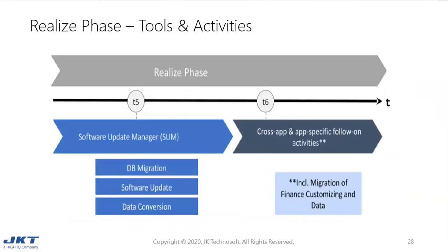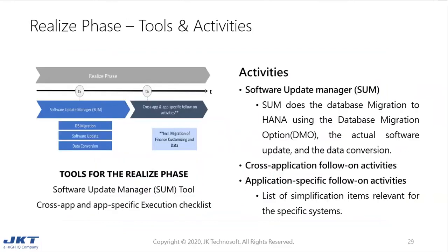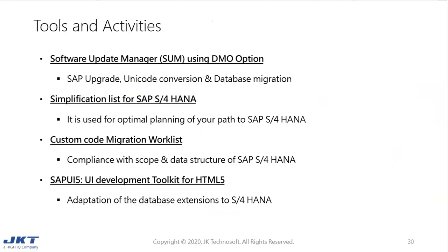For the realize phase, the Software Update Manager — the SUM tool — is responsible for DB migration and SAP upgrade. To summarize all the tools and activities: we use the Software Update Manager for SAP upgrade, Unicode conversion if required, and database migration. Then we use the simplification list for optimal planning to migrate to S4HANA. Then the custom code migration worklist for compliance and scope for data structures of SAP S4HANA. And then the UI development toolkit for adapting database extensions to S4HANA.